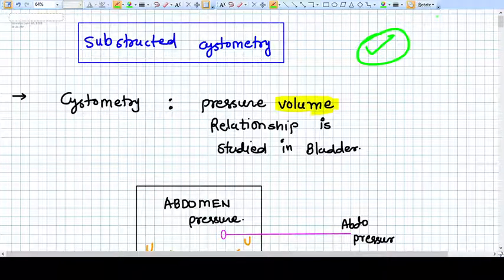Hello everyone, in this video we are going to talk about subtracted cystometry. Cystometry means we are going to study the relationship of pressure and volume in the bladder, the urinary bladder.